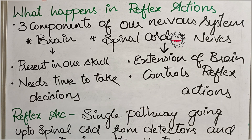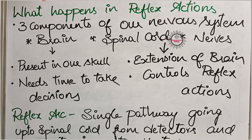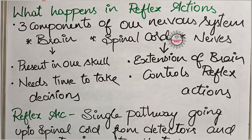The brain is made up of a bundle of nerve cells and is present in our skull region, protected in a box-like structure called the cranium. It is the decision-making organ, so it will take some time to make decisions. Whatever the action — voluntary or involuntary — it will first be sent to the brain, which receives that information, analyzes it, and gives responses accordingly. Meanwhile, this process takes some time.